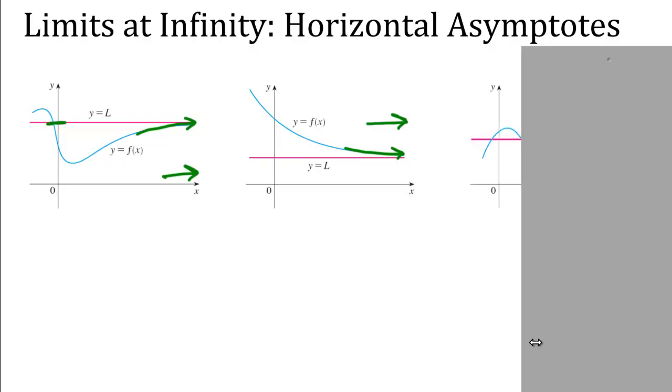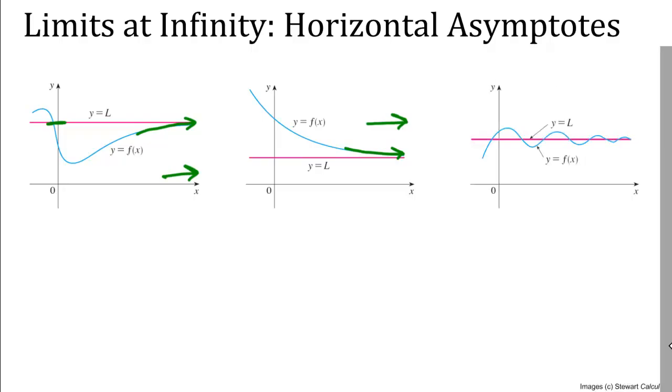But with horizontal asymptotes, you can also have a third kind of behavior. This is called oscillating, but notice how each time the little bumps get shorter and shorter. So it's still approaching that red line, but it's going to wiggle as it does this.